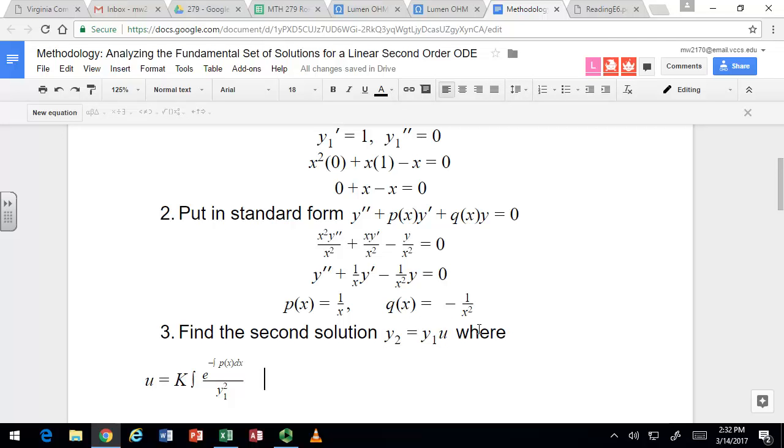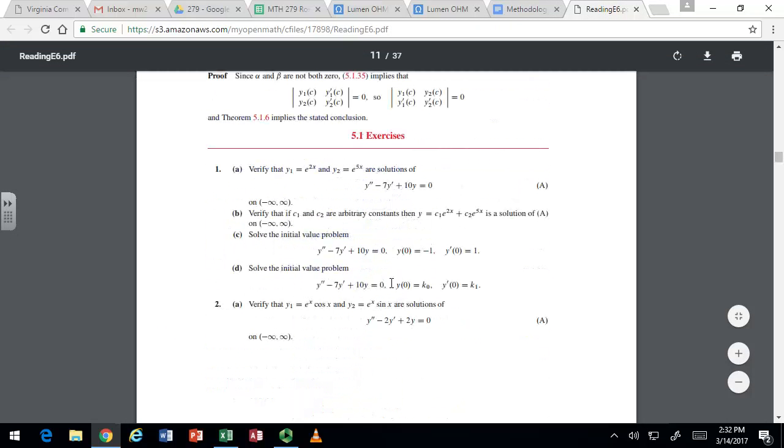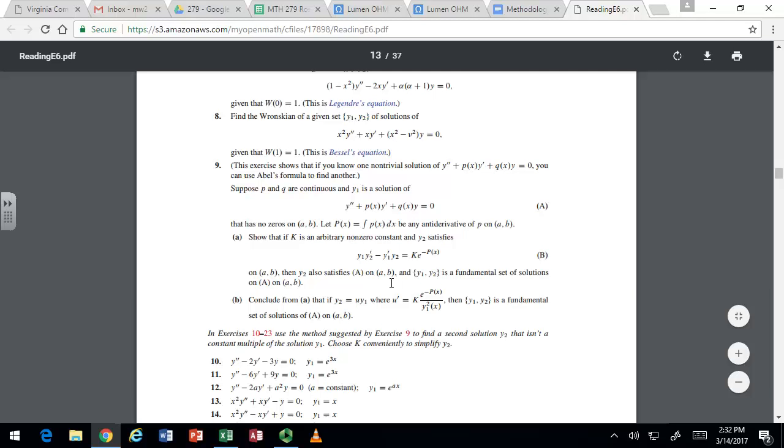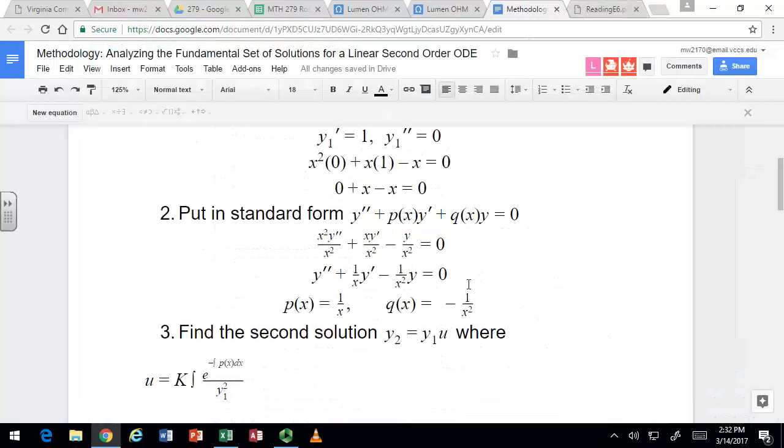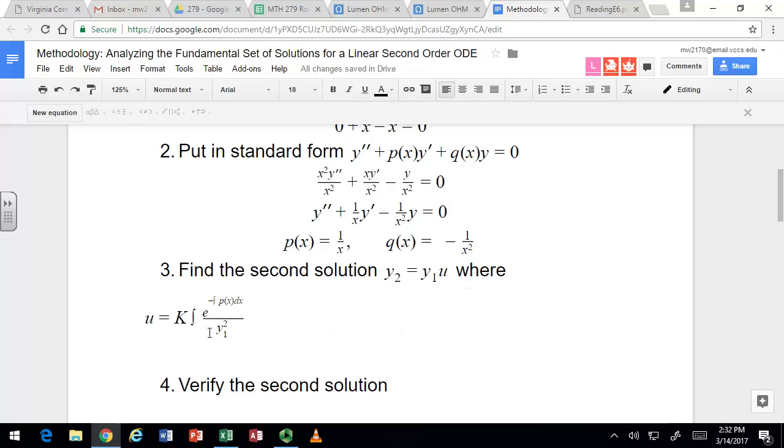Now, there is a problem in the textbook that goes through this process, and it's talked about in the critical thinking questions. We're going to avoid a lot of that, but just for reference, it is exercise 9 on page 205. But here's the formula, and it just depends on the first solution, the function p(x). And here k is a constant we can pick for convenience.